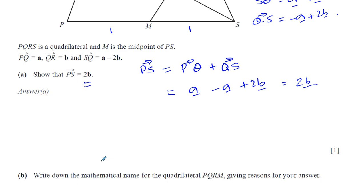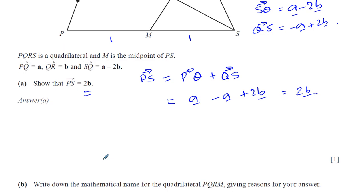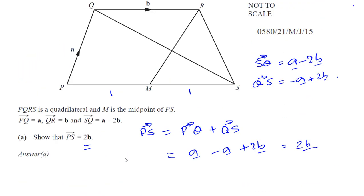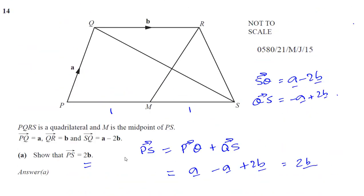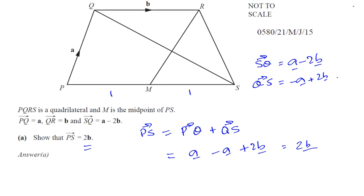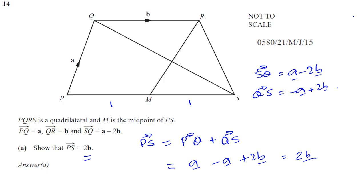Then it says part B, write down the mathematical name for the quadrilateral PQRM, giving reasons for your answer. Now, they've told us here, PQRM. So I want to find out what this is. Now, I know that PQ is, sorry, PS is 2B. And this is the ratio 1 to 1. So PM is B.